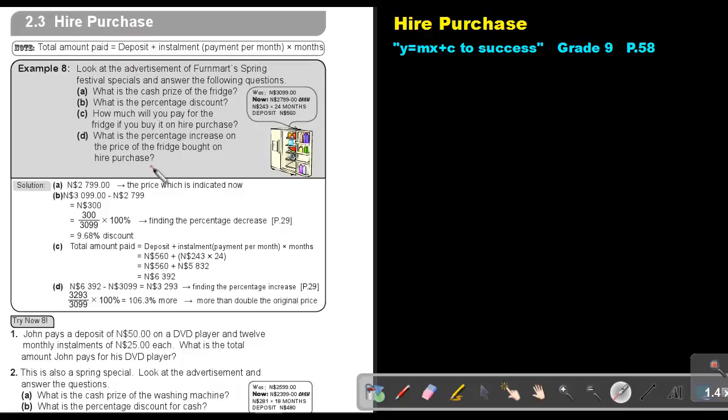Let's look at an example. Look at the advertisement of Firmat Spring Festival specials and answer the following questions. What is the cash price of the fridge? There is the cash price: $2,799.